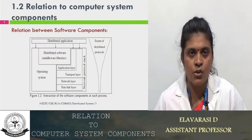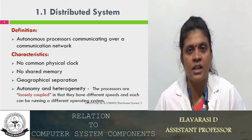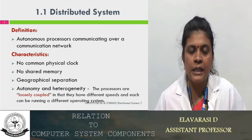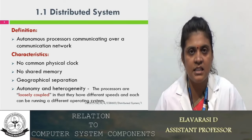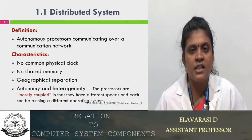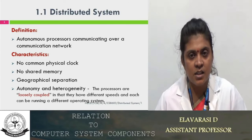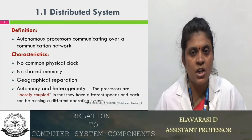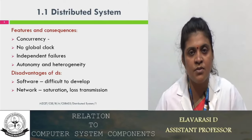Before ending the lecture, let us recall everything we have discussed in the distributed system. The basic definition: it is an independent system where processors communicate over a communication network. The important characteristics are: no common physical clock, no shared memory, geographically separated, and autonomy and heterogeneity. Regarding no common clock — each processor has a physical clock but the entire system does not have a common clock, so every processor has to synchronize with each other. Communication only through the network via message passing. The features and consequences are: concurrency, no global clock, independent failure, autonomy, and heterogeneity.